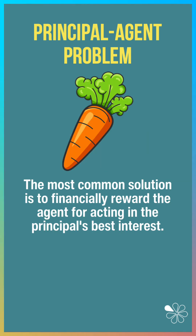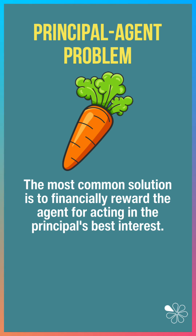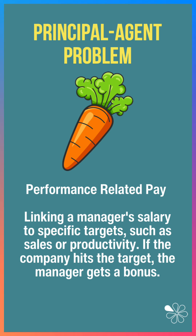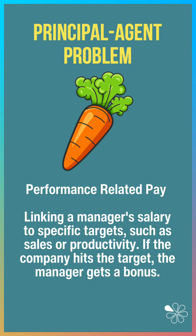The most common solution to the principal-agent problem is financially rewarding the agent for acting in the principal's best interests. In other words, aligning the interests through, for example, performance-related pay, where you link the manager's salary to key targets such as productivity or sales.